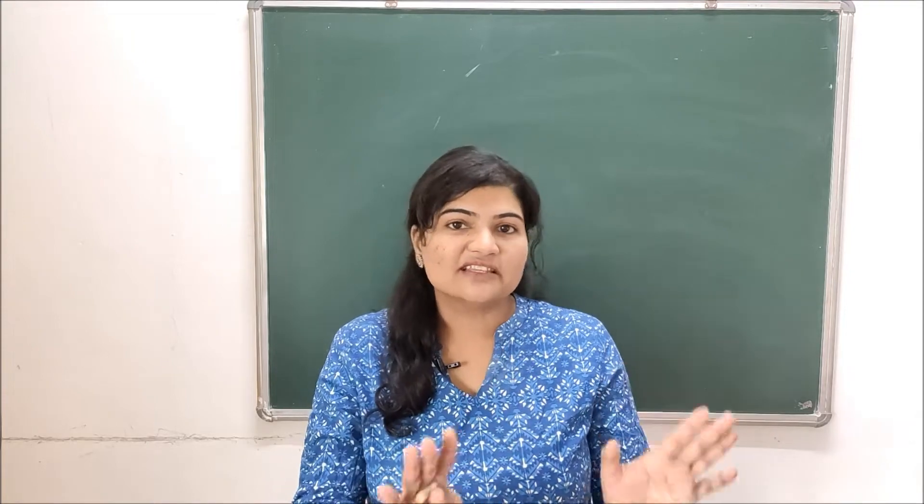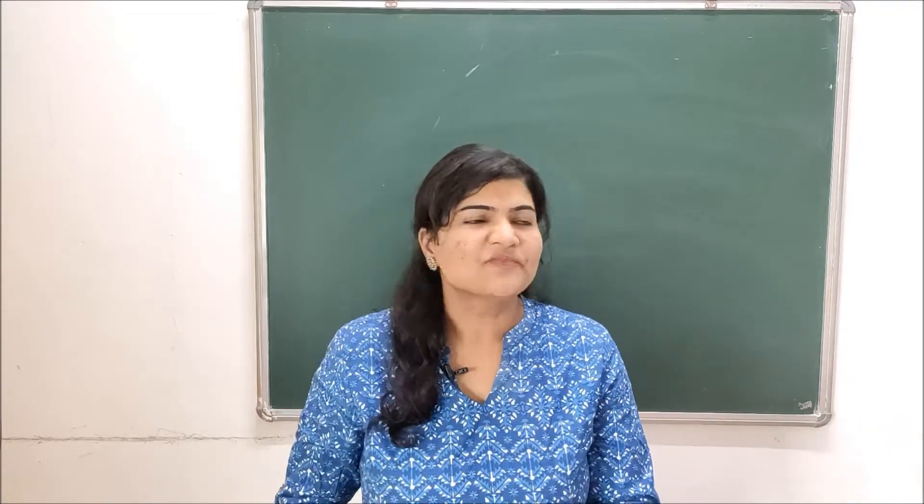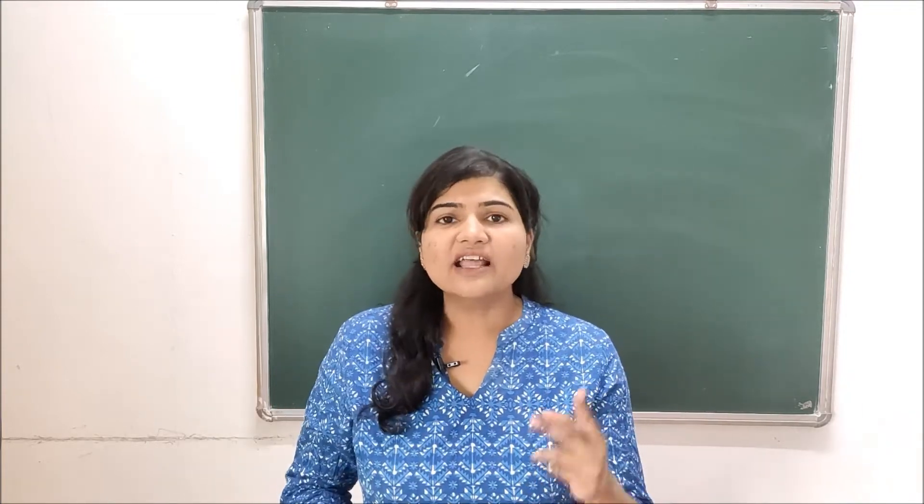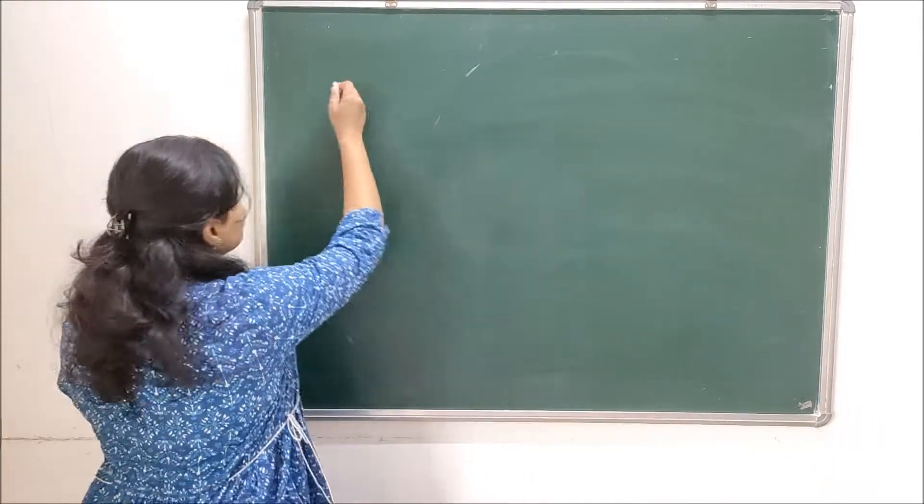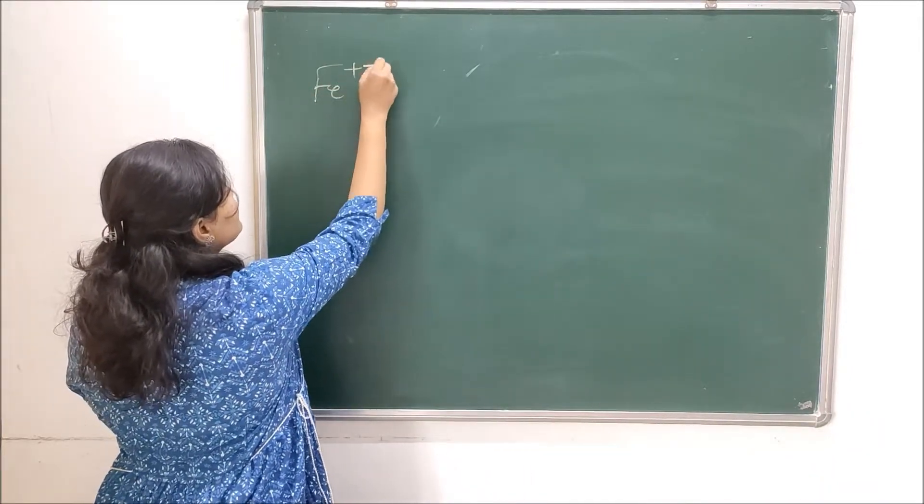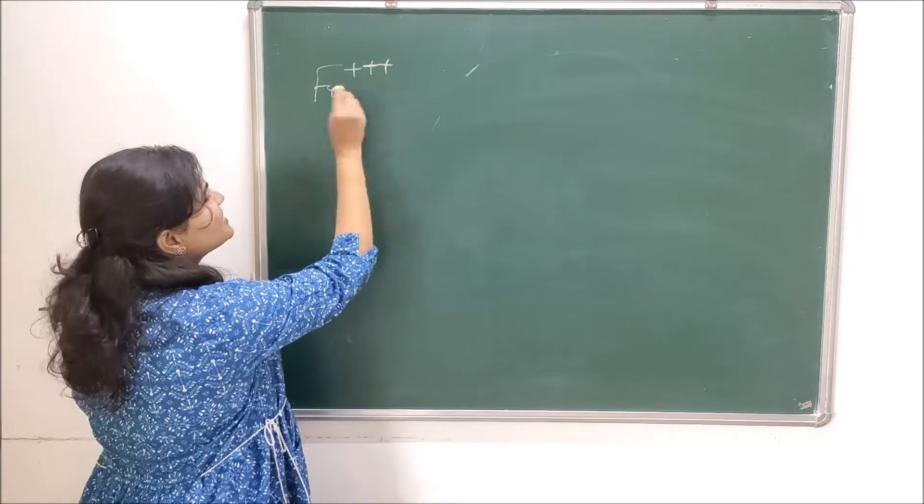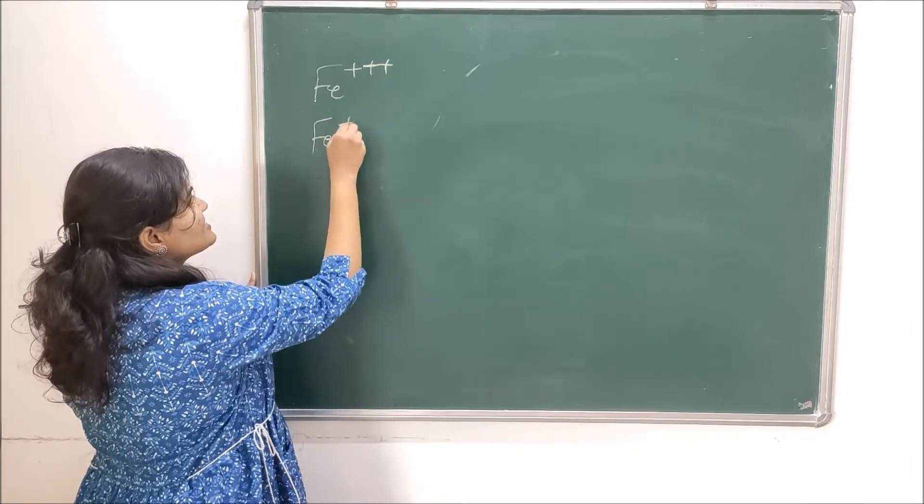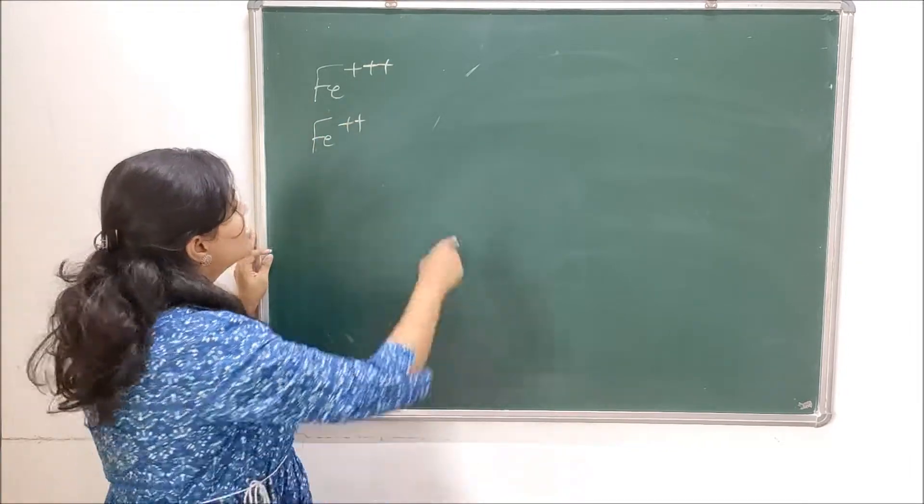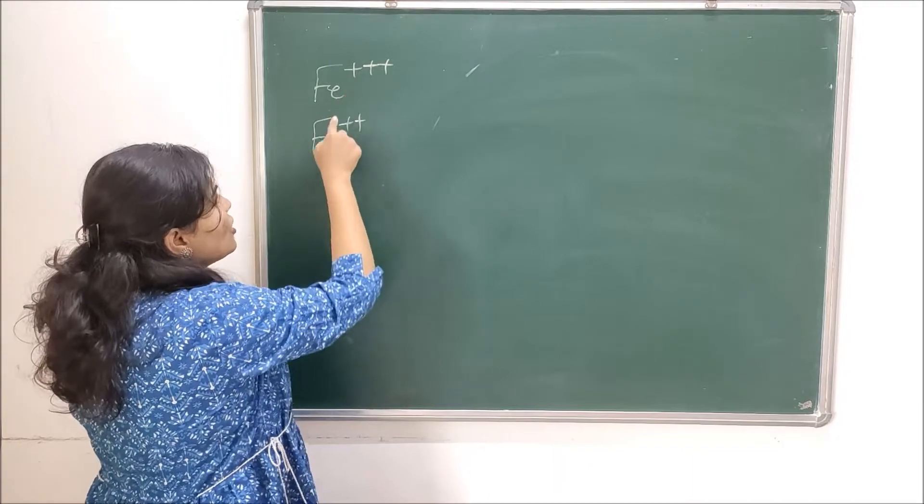Let's find out how the reaction actually goes on - what is the basic principle involved in this limit test for iron. You know iron has two oxidation states: ferric, which is triple plus or Fe³⁺, and ferrous, which is plus two or Fe²⁺.